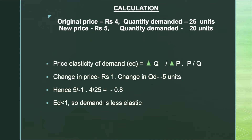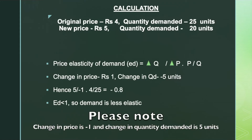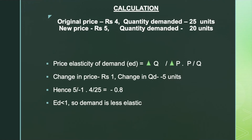Substituting into the formula (ΔQ/ΔP) × (P/Q): ΔQ is 5 and ΔP is minus 1. P represents the original price and Q represents the original quantity. So it is 5 divided by negative 1, multiplied by 4 by 25, which equals negative 0.8.